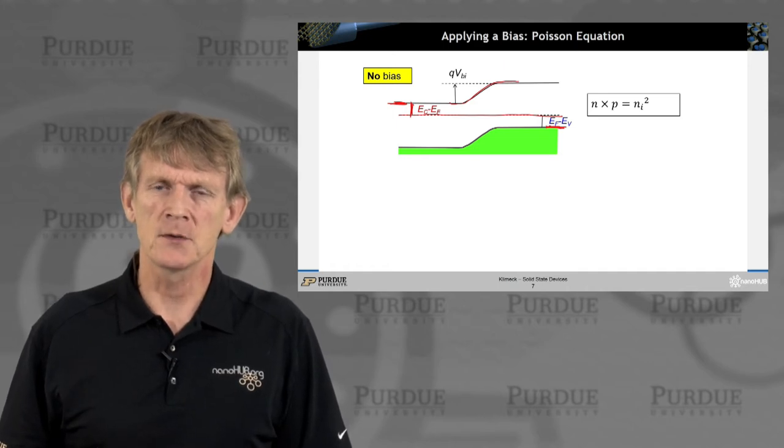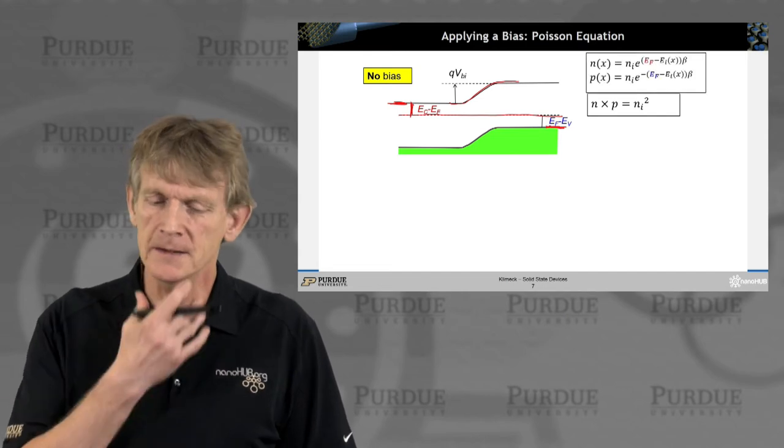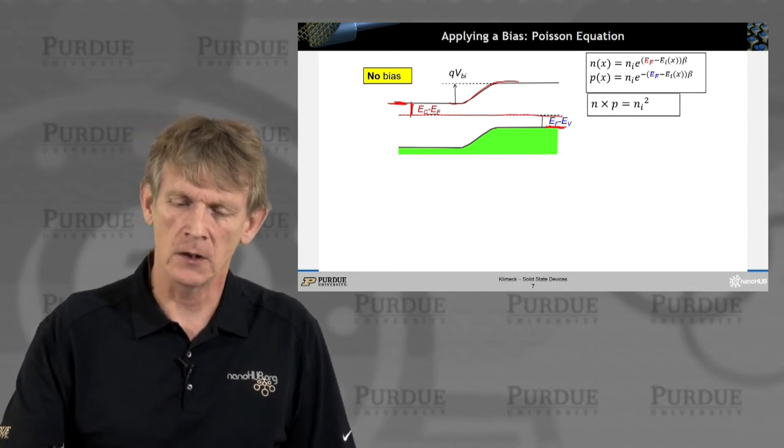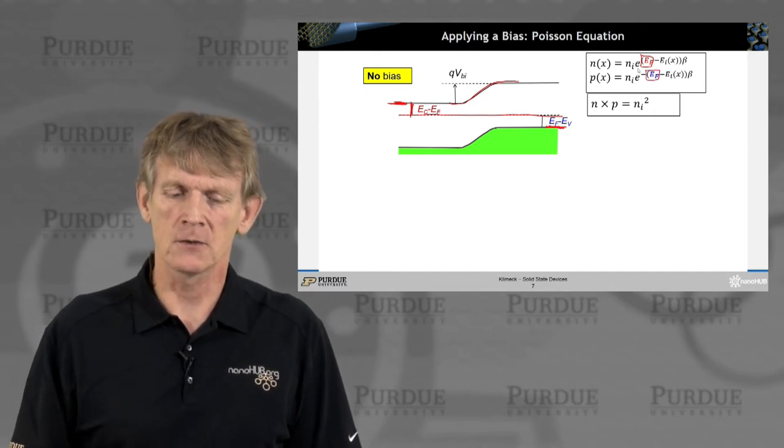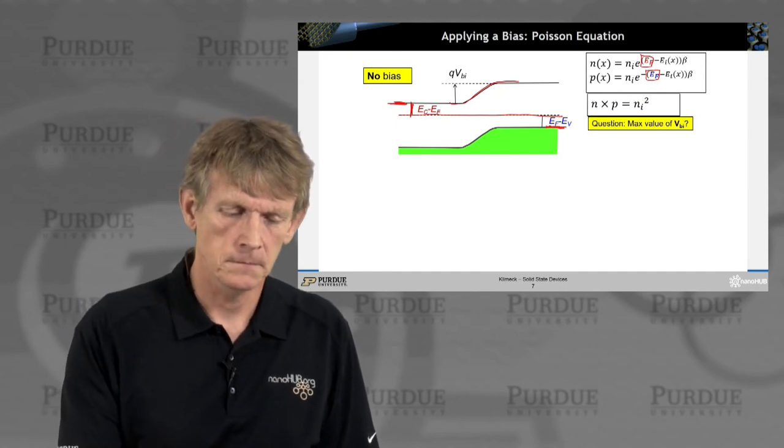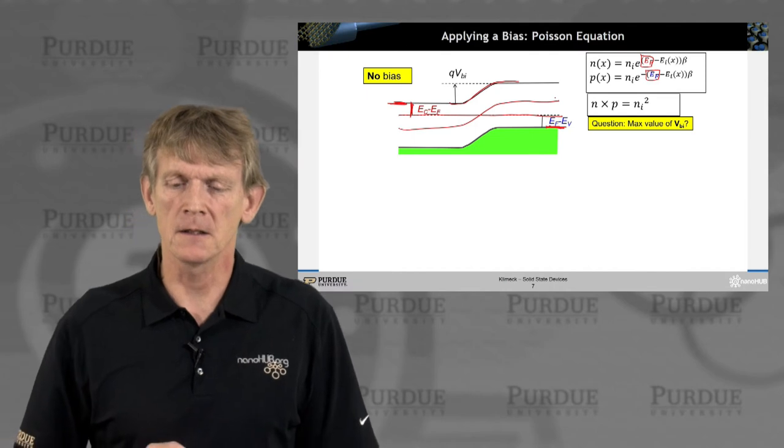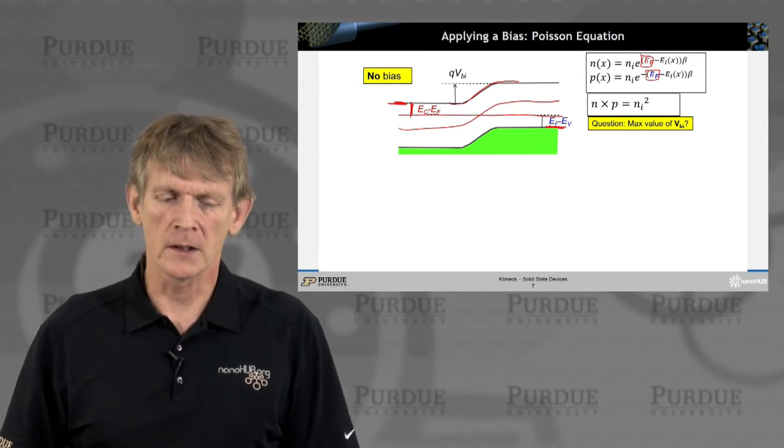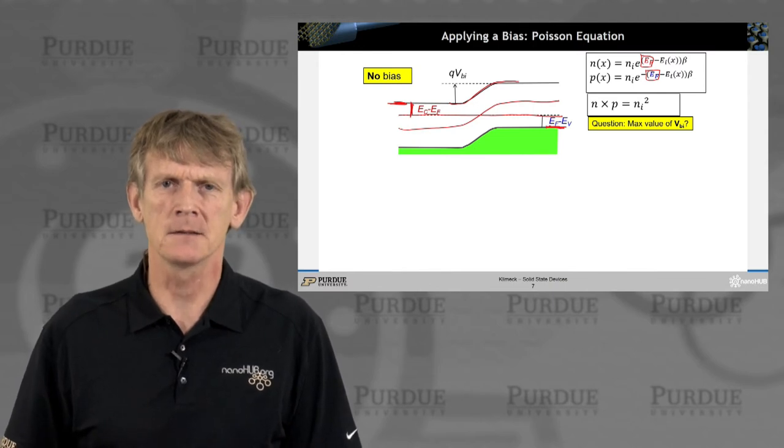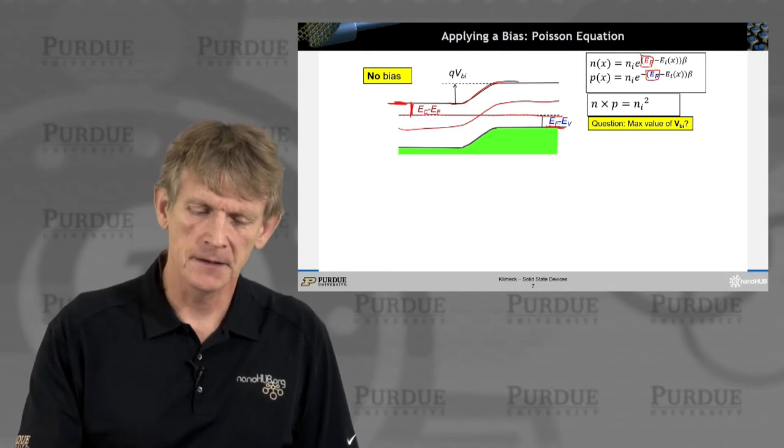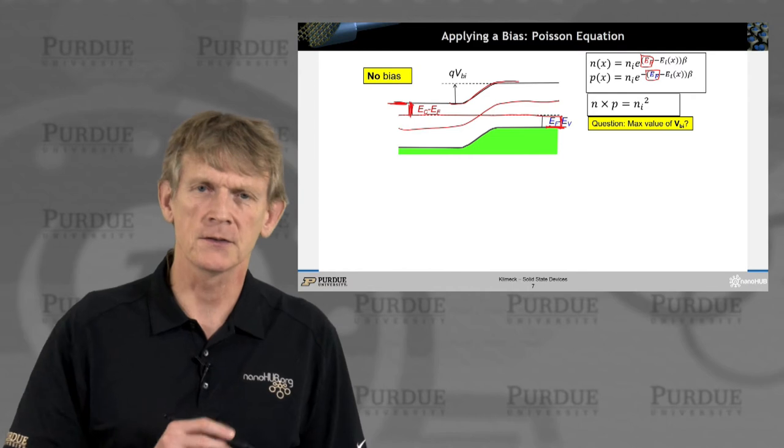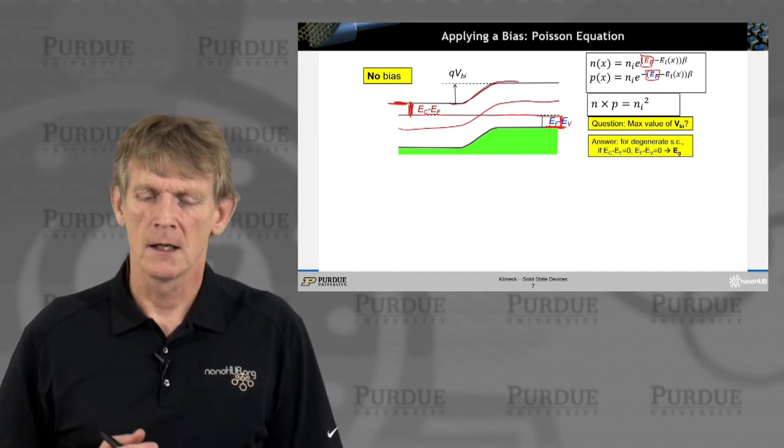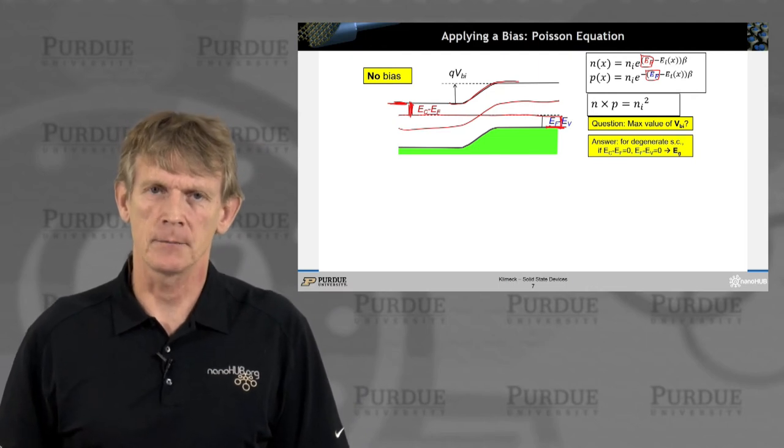So, N times P is Ni squared. You can write down a function of electrons and holes as a function of distance x throughout the structure. You have constant Fermi levels, one Fermi level like this. But, effectively, your intrinsic level is showing up here. And that one is a function of position. Now, one question that might arise. How much built-in potential can you build into a PN junction like that? Well, you can make this distance here small and this distance here small. So, very, very high doping maximizes the built-in potential you can build in. And that means you can, at maximum, have a built-in potential of the band gap.